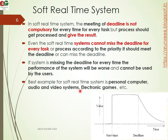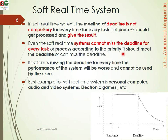Next is the soft real-time system. In a soft real-time system, meeting the deadline is not compulsory for every task. There is no strict deadline for every task, but the process should be completed and give the result. Processes should be handled according to priority and should meet the deadline where possible.